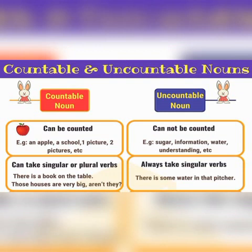Some examples of countable nouns are apple, school, and picture — we can count these things easily. Examples of uncountable nouns are information and water — we cannot count these. Countable nouns can take singular or plural verbs, but uncountable nouns always take a singular verb. This is also a major difference between both, and this is a very important kind of noun.